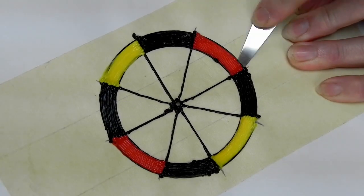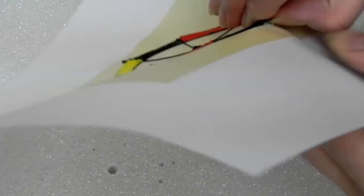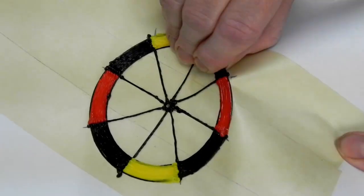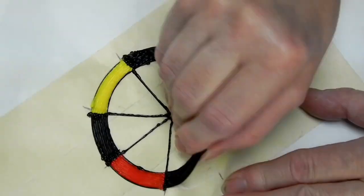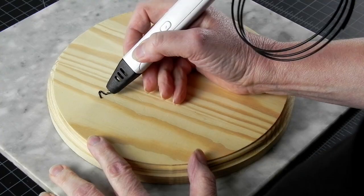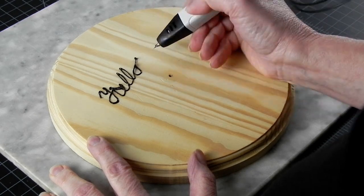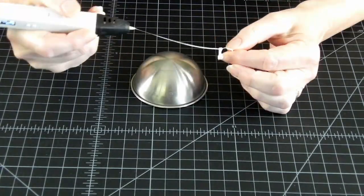The wrong work surface can completely sabotage your project. If the plastic sticks too well to the surface, you might break the project or the surface or both trying to get it off. If the plastic doesn't stick well enough or at all, you just won't have any project to take off.